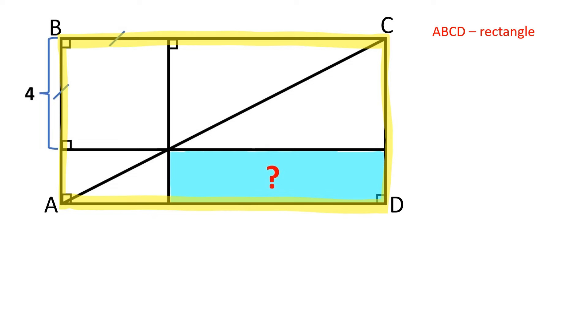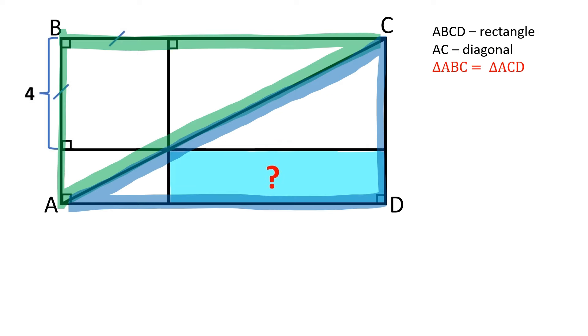ABCD is a rectangle. AC is its diagonal. The diagonal of a rectangle divides it into two congruent triangles. Therefore, triangles ABC and ACD are congruent.